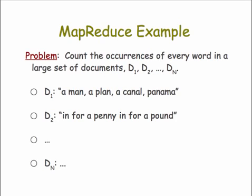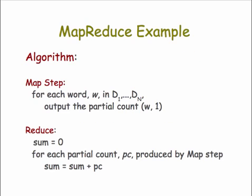Let's take a look at how MapReduce works. We're going to look at an example that's frequently used to explain the MapReduce model. Imagine the problem of counting the occurrences of every word in a large data set of documents, where you have, say, n documents. The first document perhaps contains the words a man, a plan, a canal, Panama. The second, in for a penny, in for a pound. So if you counted all the words a, there's 1, 2, 3, 4, 5 in just these two documents. Imagine there's a petabyte data stored in the document.